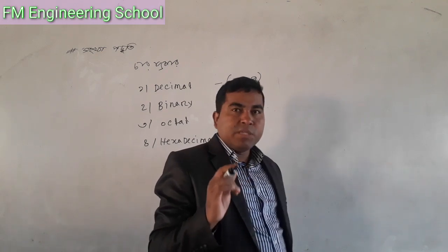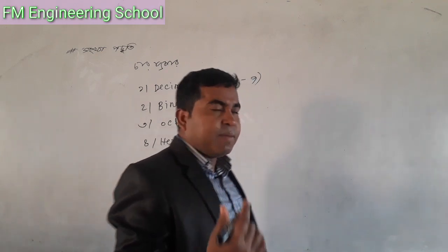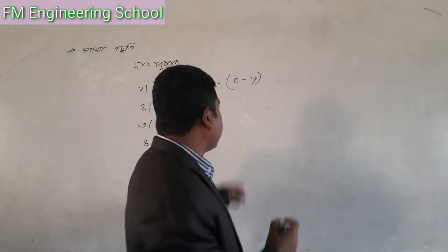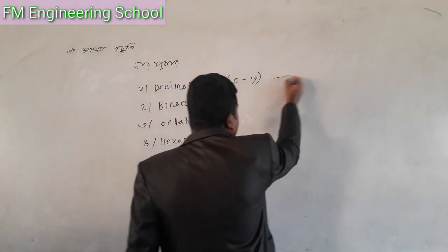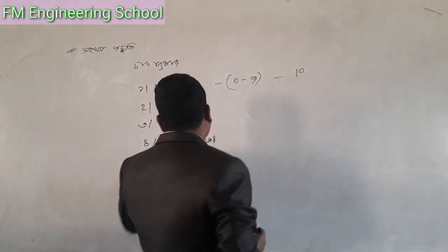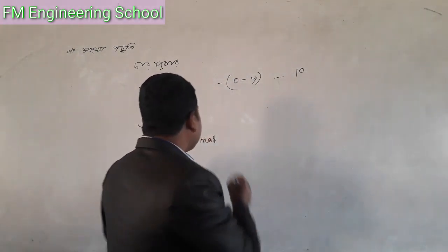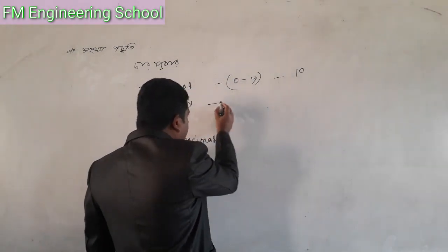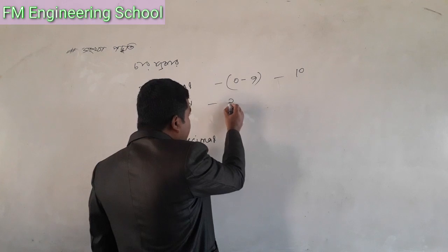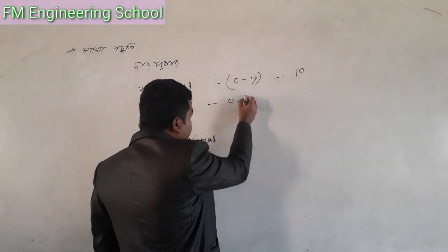Binary has a base of 2. If you enter base 2, the number system uses only 0 and 1.